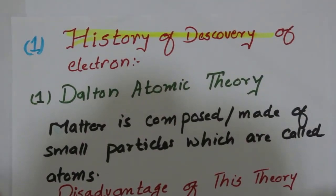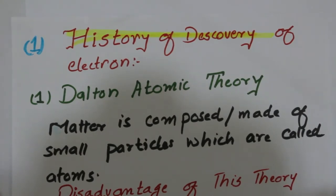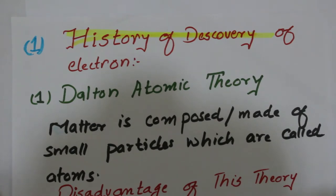Hello and welcome to the Chem Crown channel. Today we are going to discuss the history and background of the discovery of the electron, and what was going on in the late 1800s when scientists were trying to find out the answer for what substances are made of.